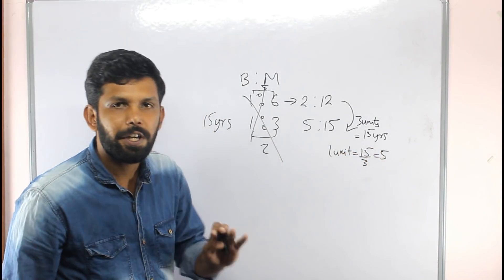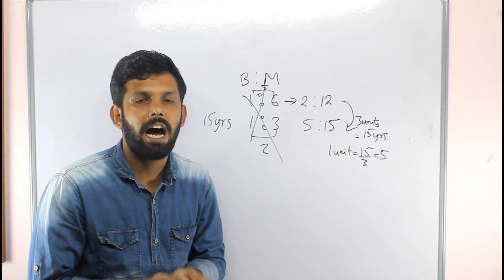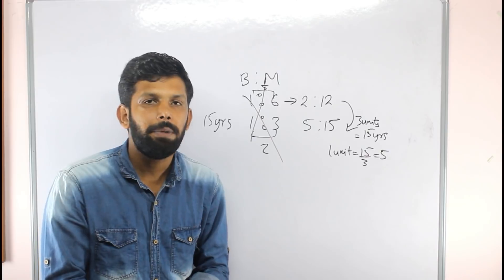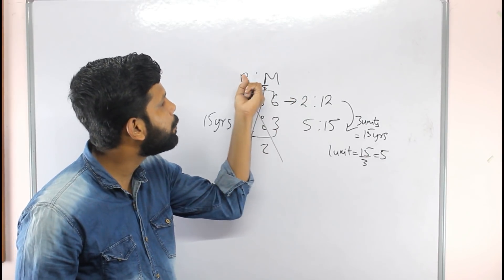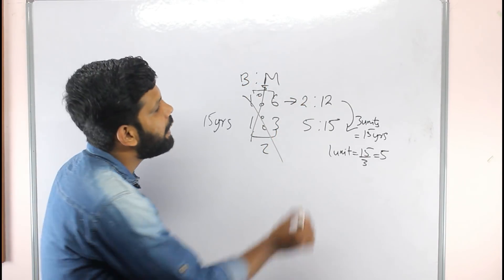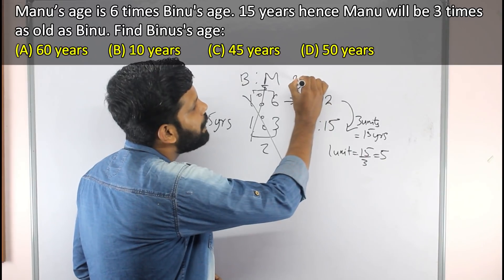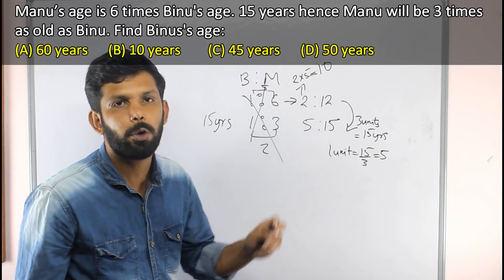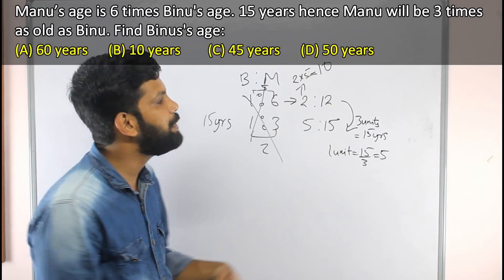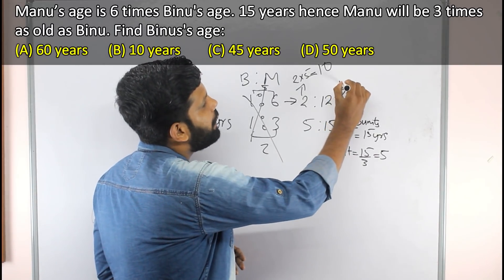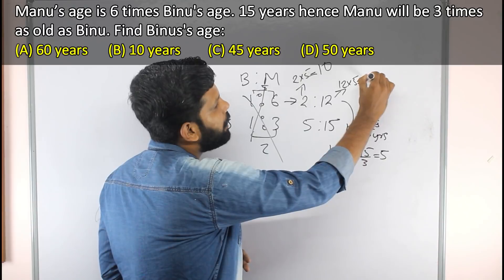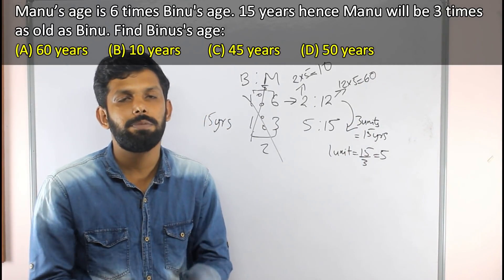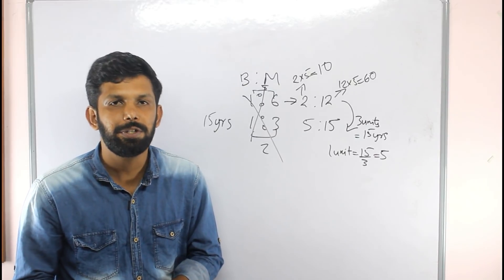Each unit is 15 divided by 3, which is 5. Vinu's present age is 2 units, so 2 into 5 is 10. Vinu's age is 10 years. That's how we apply the ratio method for age problems.